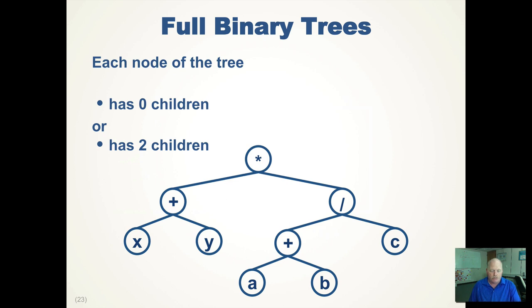A full binary tree is a binary tree such that each node either has no children or two children. If a node has one child, then it's not a full binary tree — it's either two or zero. Our expression tree is a full tree because each node either has zero children or two children.